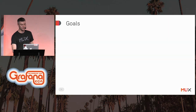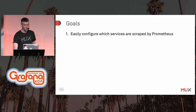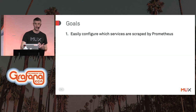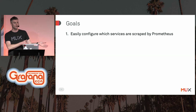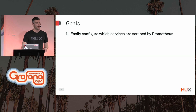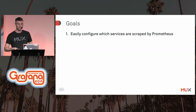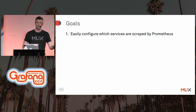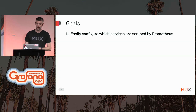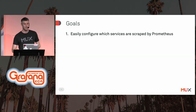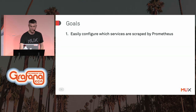So what were our goals for monitoring? The first was to easily configure which services were scraped by Prometheus. In the old system, we had to run a Telegraph sidecar, which was very config-heavy — you end up running a bunch of Telegraph containers to relay metrics into InfluxDB. We still use Telegraph today to adapt applications that don't directly expose Prometheus metrics, but we wanted to rely on Kubernetes metadata for automatic service discovery.